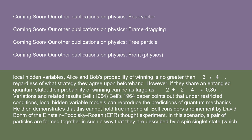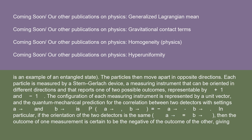Bell's 1964 paper points out that under restricted conditions, local hidden variable models can reproduce the predictions of quantum mechanics, then demonstrates that this cannot hold in general. Bell considers a refinement by David Bohm of the Einstein-Podolsky-Rosen thought experiment. In this scenario, a pair of particles are formed together described by a spin-singlet state, which is an example of an entangled state. The particles then move apart in opposite directions, and each is measured by a Stern-Gerlach device.